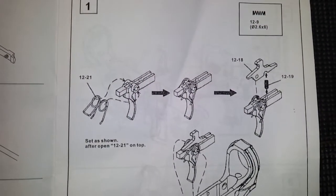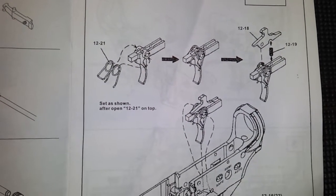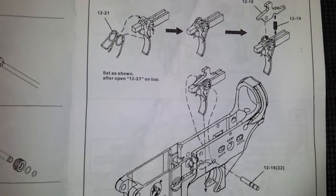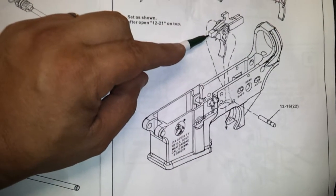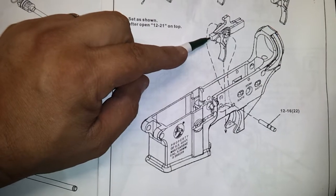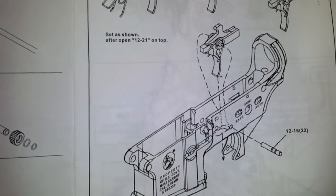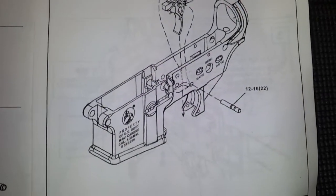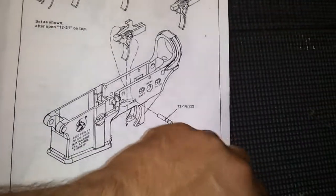Figure number one, this shows your trigger, your trigger spring, and your sear. Now here's something to remember: right here in the front of this piece, there's a screw that's going to go in there and you'll find it. They just don't show it here in the instructions.